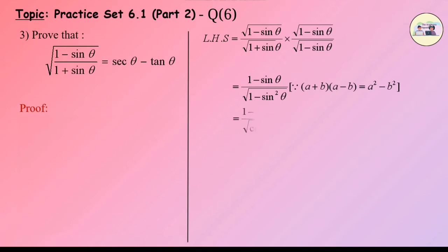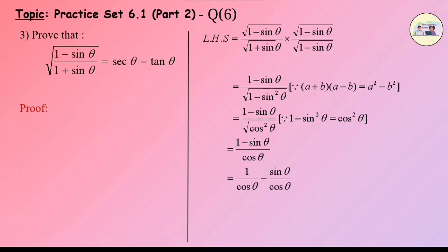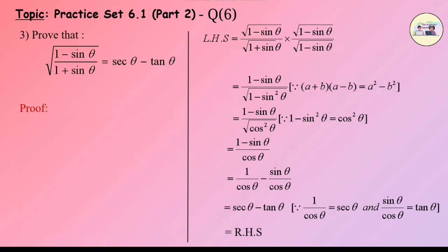Since (a + b)(a - b) = a² - b², this equals (1 - sinθ)/√(cos²θ), since 1 - sin²θ = cos²θ. This equals (1 - sinθ)/cosθ = 1/cosθ - sinθ/cosθ = secθ - tanθ, since 1/cosθ = secθ and sinθ/cosθ = tanθ, which equals RHS.